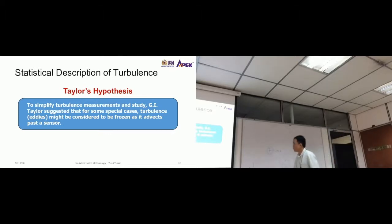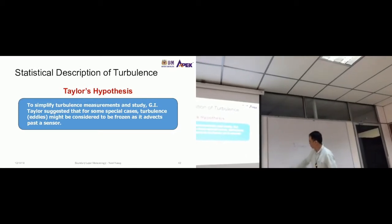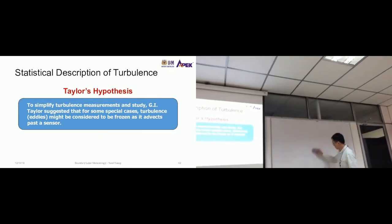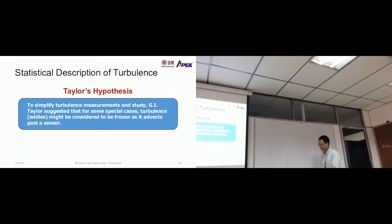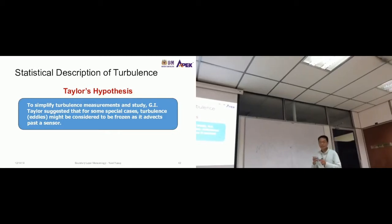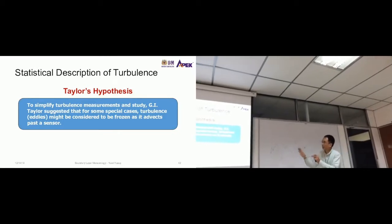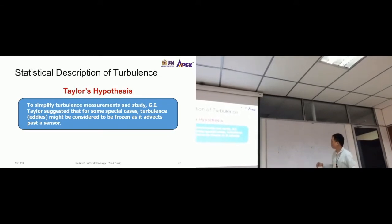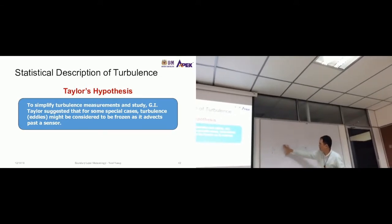Which means that the turbulence is frozen as it advects past the sensor. Here's a diagram of this. Let me give you a preview. This is the sensor, and we know turbulence is like that. According to this hypothesis, an assumption, this turbulence is frozen - that means it does not change its characteristic as it goes past this sensor.